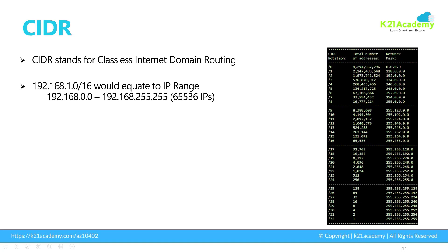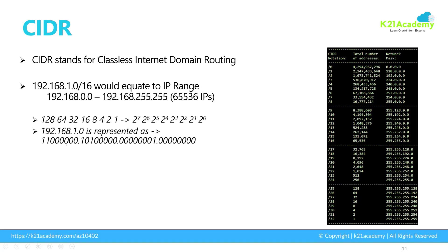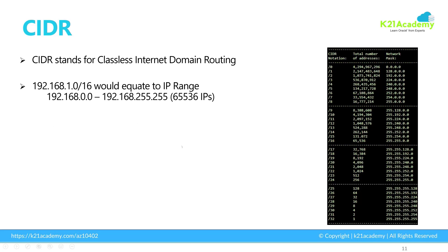Similarly there is a second octet, third octet, and fourth octet. For example: 192 is the first octet, .168 is the second octet, .1 is the third octet, and .0 is the fourth octet. These are typically represented as four octets — that's why we call it IPv4.